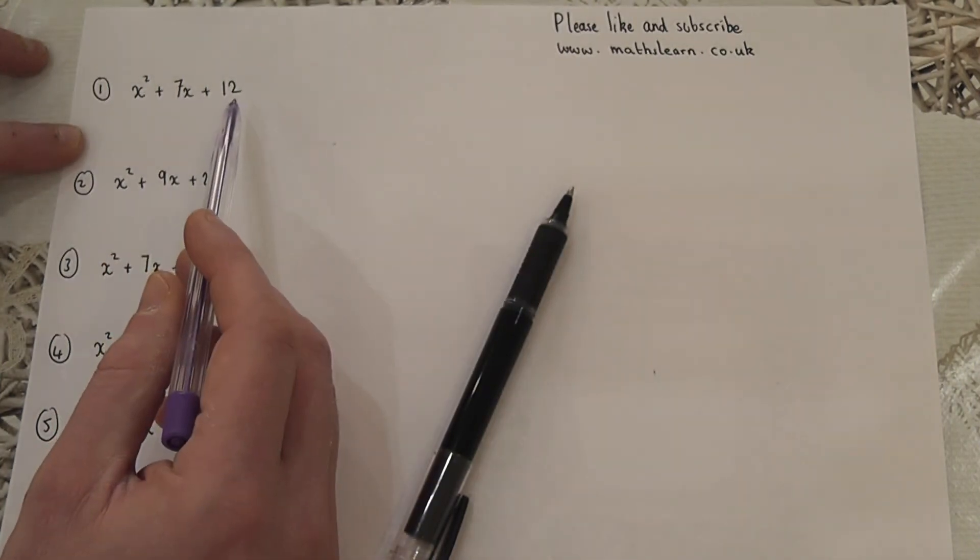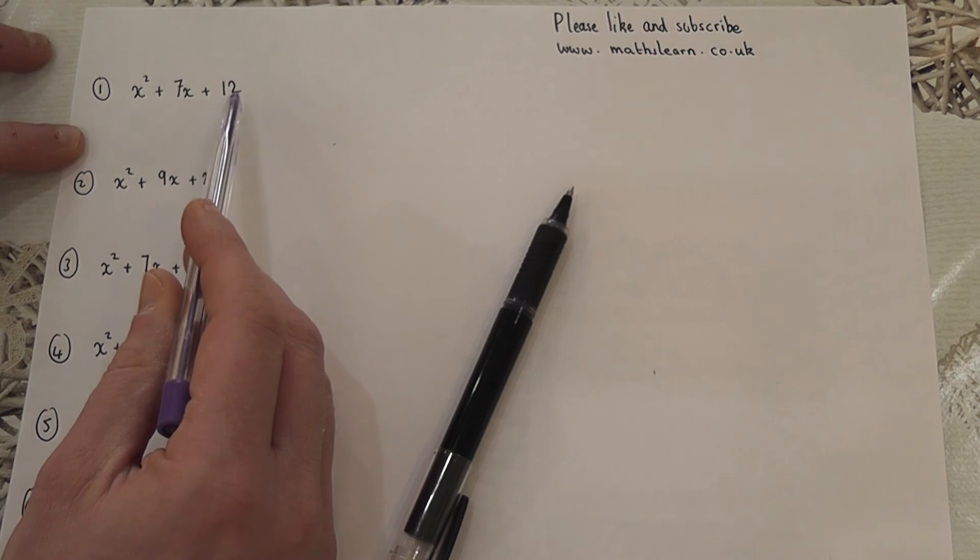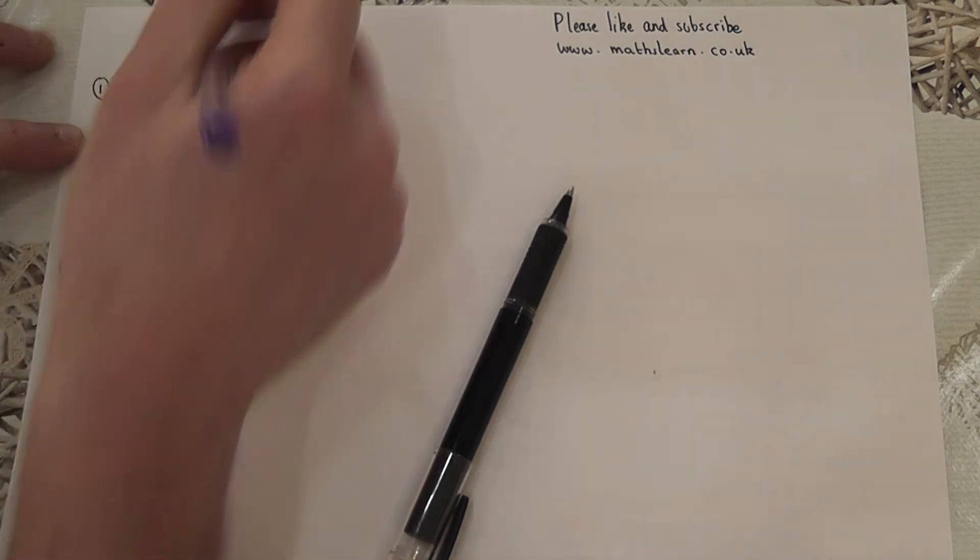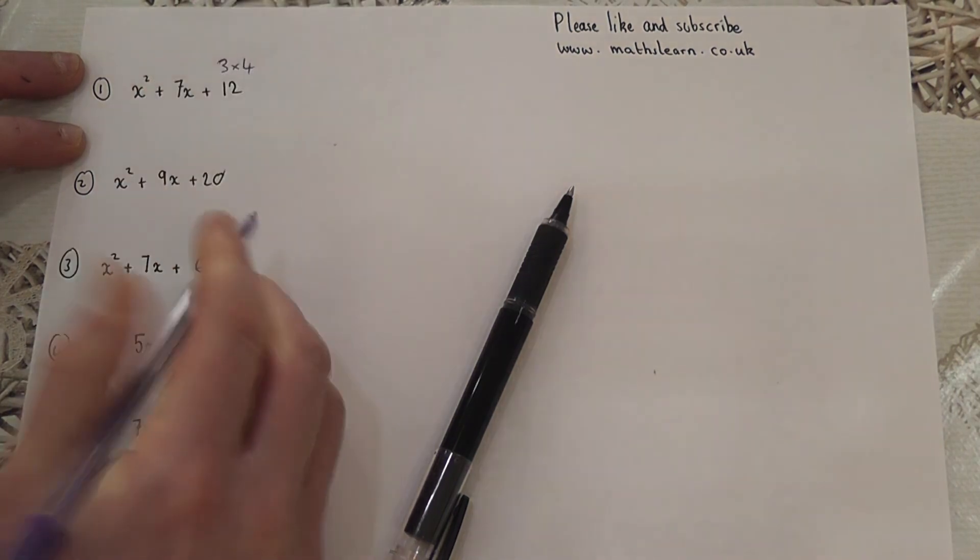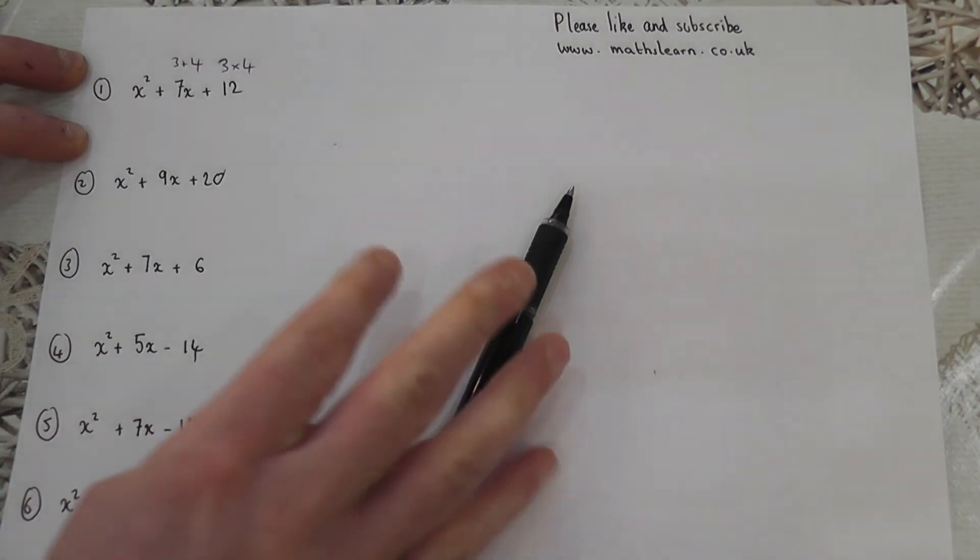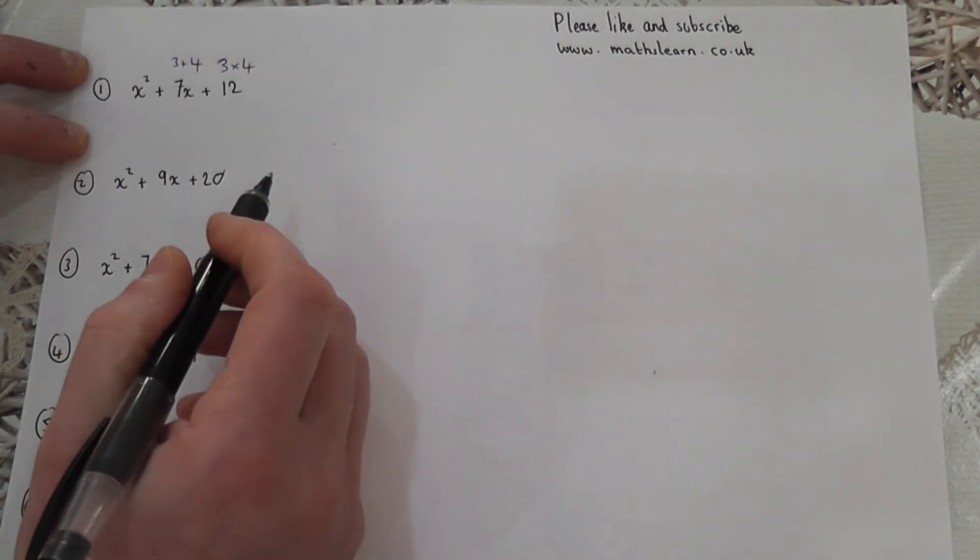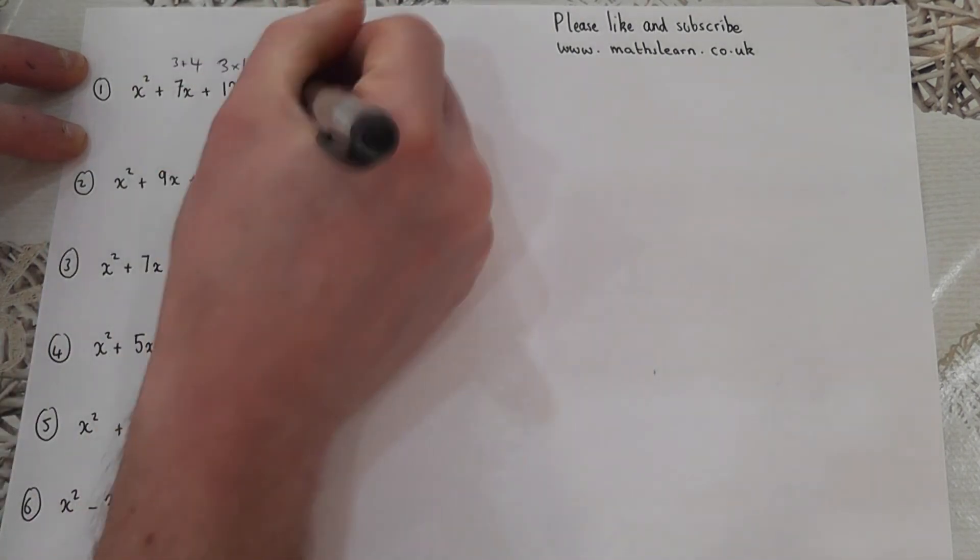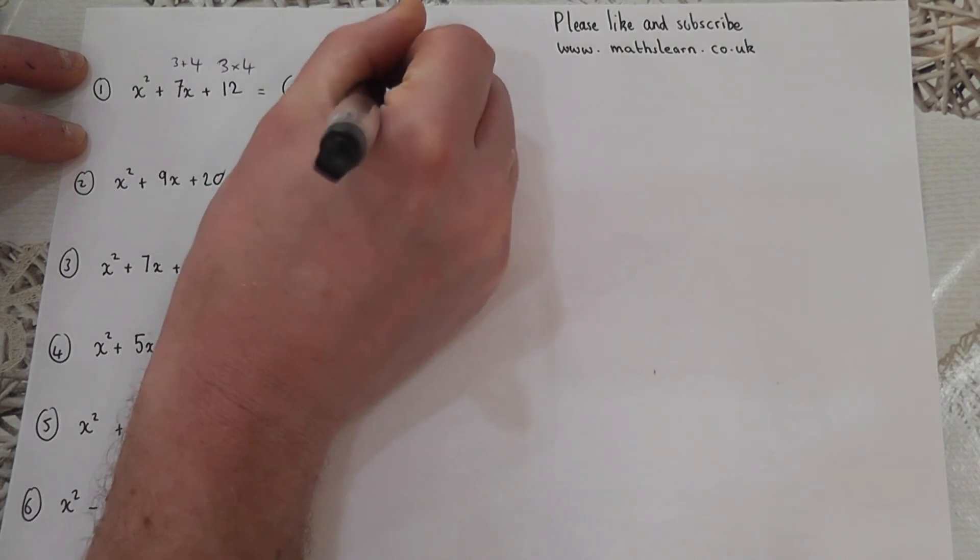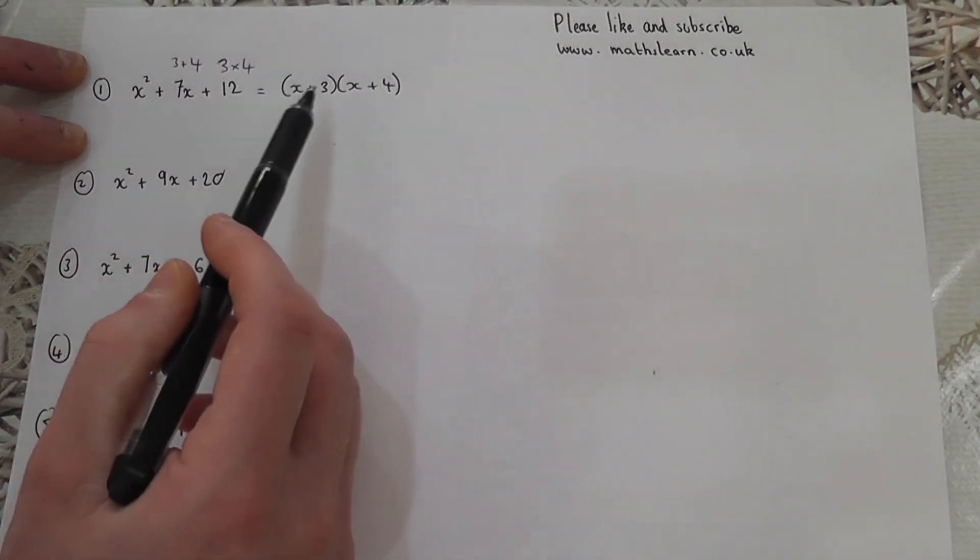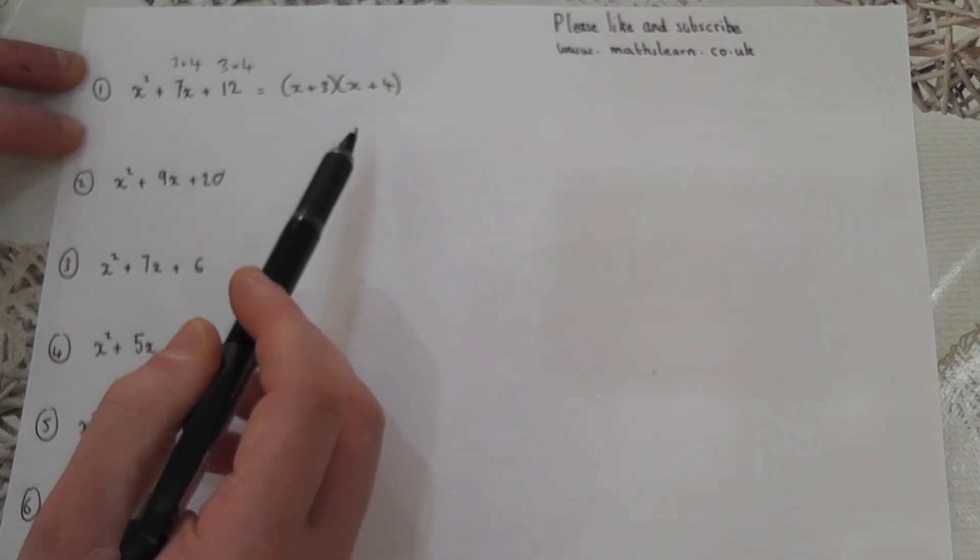The factors of 12: 1 times 12, 2 times 6, and the key ones are 3 times 4. Because 3 times 4 makes 12, and 3 plus 4 makes 7. This means that the factorized form in two brackets for this expression is x plus 3 and x plus 4, because this expands to give that back as an answer.